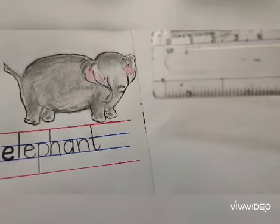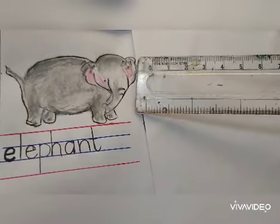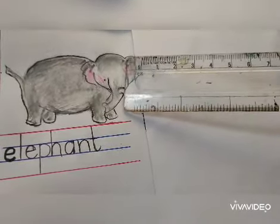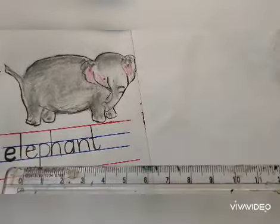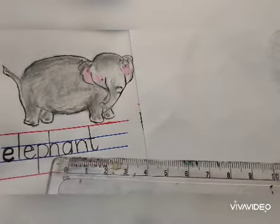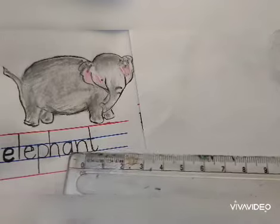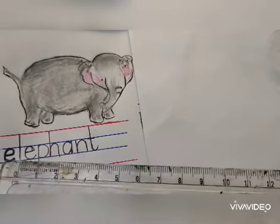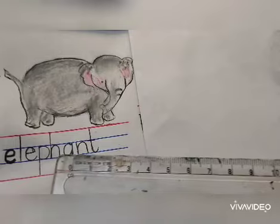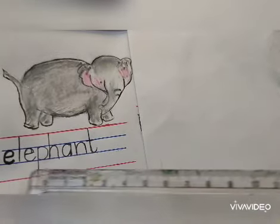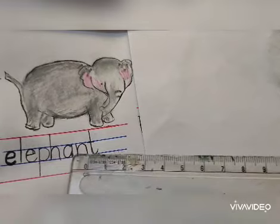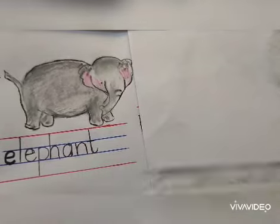See children, this is the picture of an elephant. To spell the word elephant, we will say E-L-E-P-H-A-N-T. Elephant. E-L-E-P-H-A-N-T. Elephant.